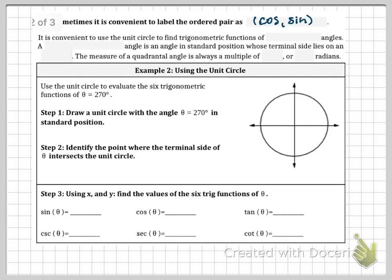Think about what comes first. Cosine C is before S alphabetically, just like X is before Y alphabetically, so cosine sine. It is convenient to use a unit circle to find trigonometric functions of quadrantal angles.